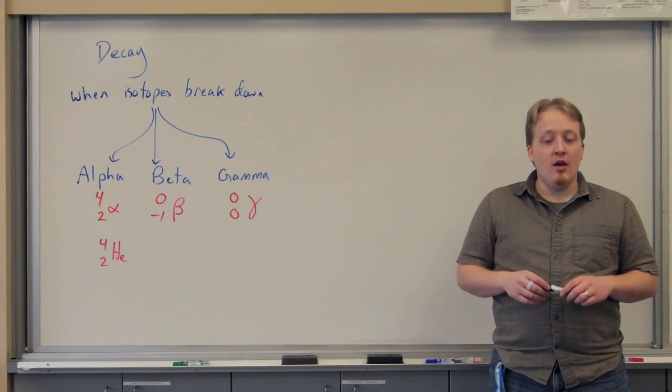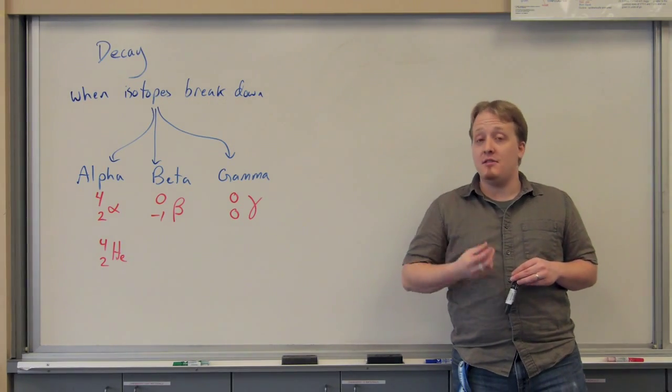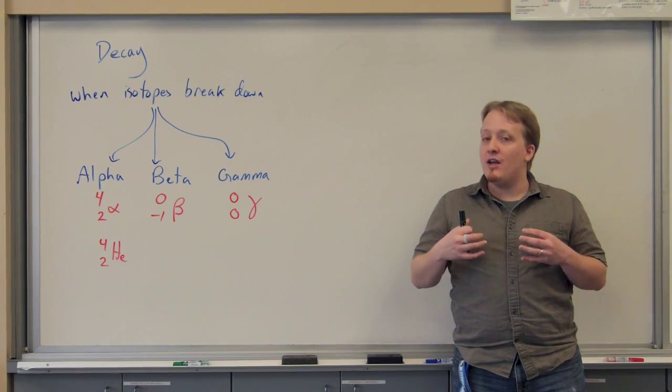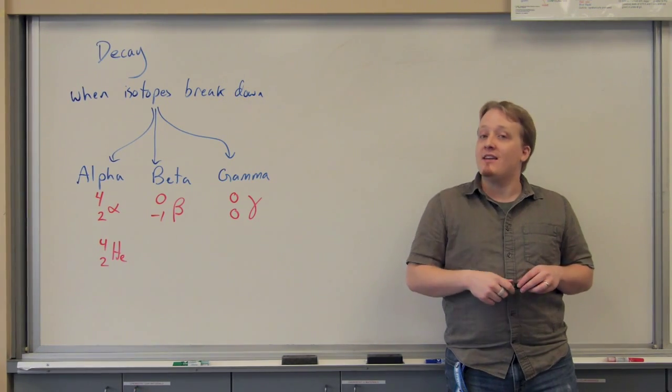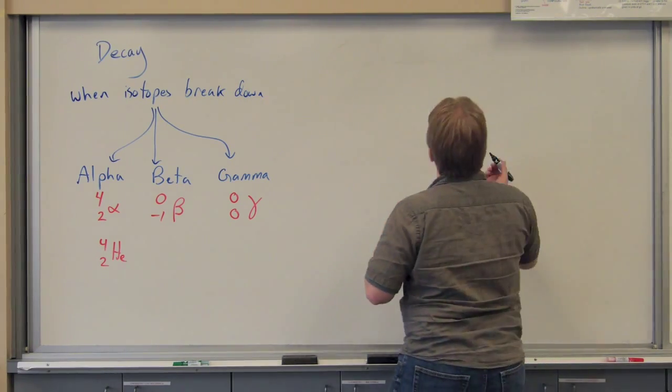With these three types of decay, we can balance these as reactions taking place in unstable isotopes just the same way we did when we were looking at the formation of new compounds when we were looking at chemical reactions. So to balance a decay reaction, what we do is the following.